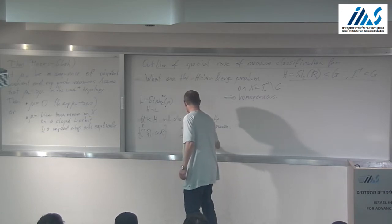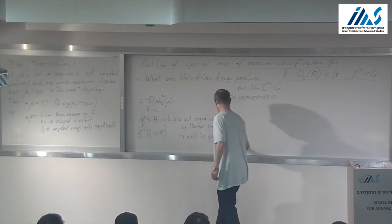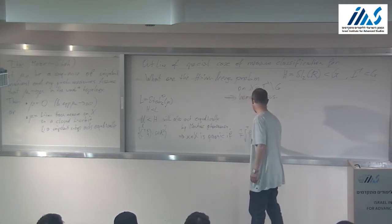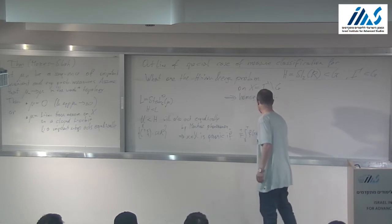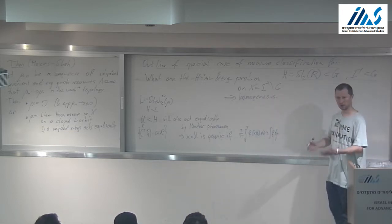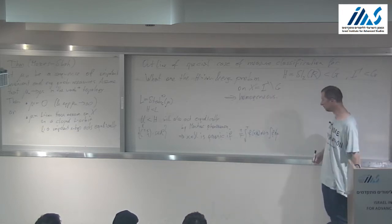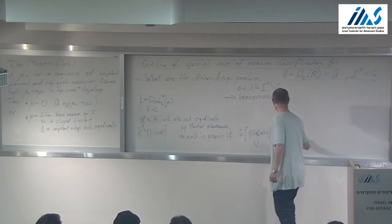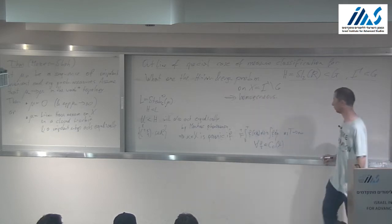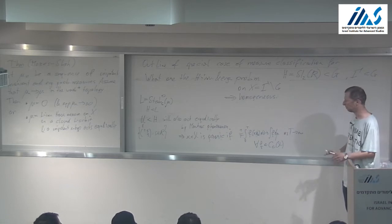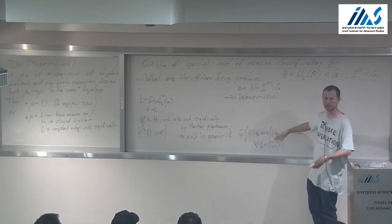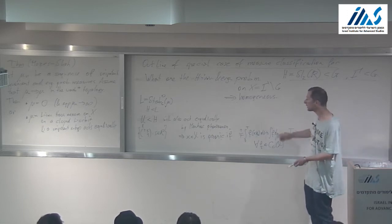X in X is generic if (1/T) integral from 0 to T of f(x · u(t)) dt converges to what it should as T goes to infinity, for every f in C_c(X), not assuming X is compact. You do it for one function, then for countably many dense functions, and you get the statement. So almost every point is generic.